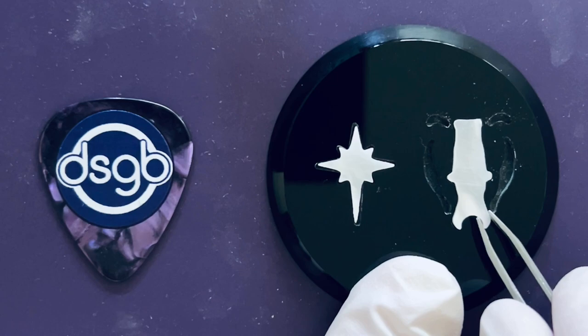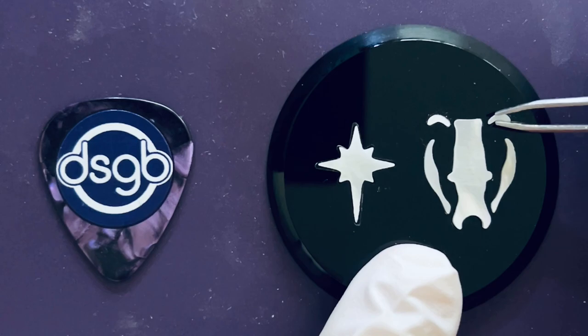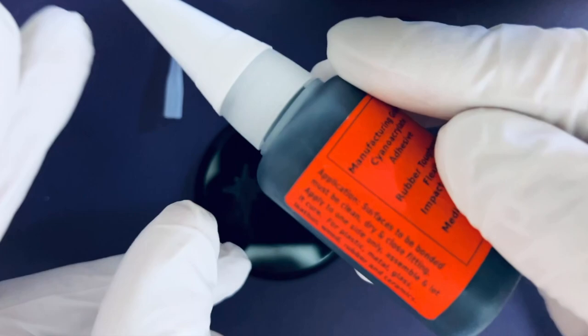Before gluing the Mother of Pearl pieces into the rebates, I'm checking that the fit is satisfactory. If it isn't, I can either adjust the pieces to fit the rebate, or revisit the CAD work, enlarge the rebate, and route it again slightly larger.